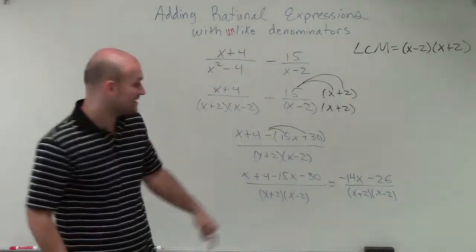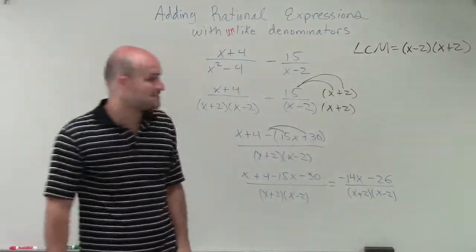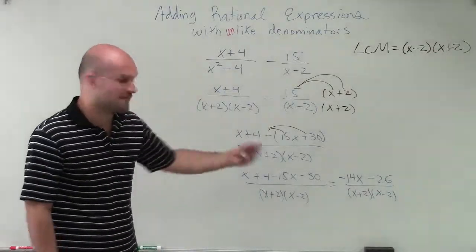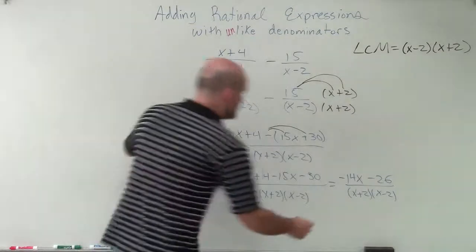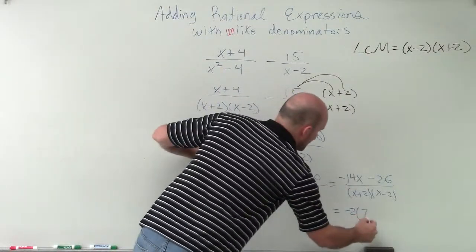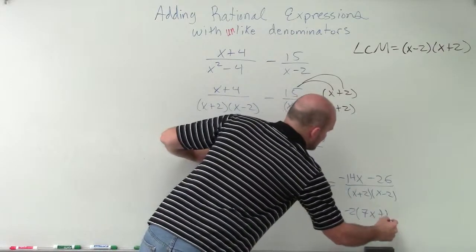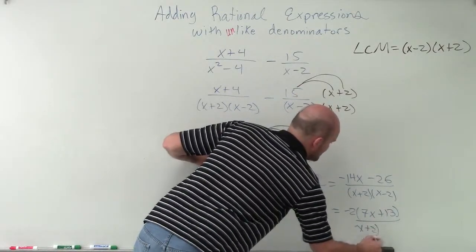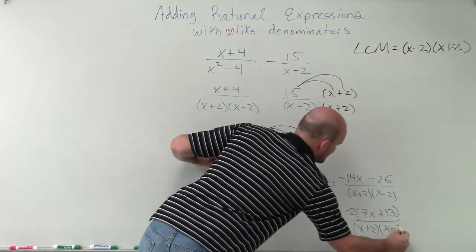Now again, you see that we can still simplify this. We can divide out common terms in our numerator. And what I like to factor out is I can factor out a negative 2. So if I factor out a negative 2, I'd be left with a positive 7x plus 13 divided by x plus 2 times x minus 2.